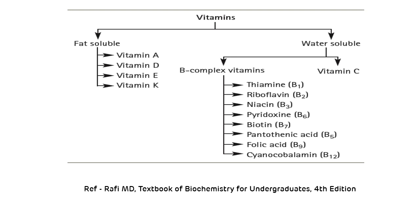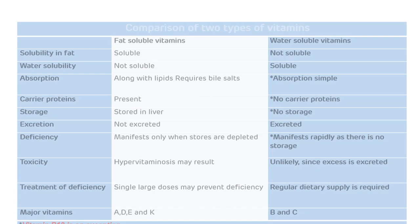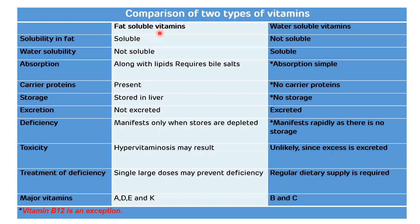Now we will see the major differences between fat-soluble and water-soluble vitamins. As the name suggests, fat-soluble vitamins are soluble in fat and not in water, while water-soluble vitamins are soluble in water but not in fat. Absorption of fat-soluble vitamins occurs along with lipids and requires bile salts, while absorption of water-soluble vitamins is very simple, except vitamin B12.